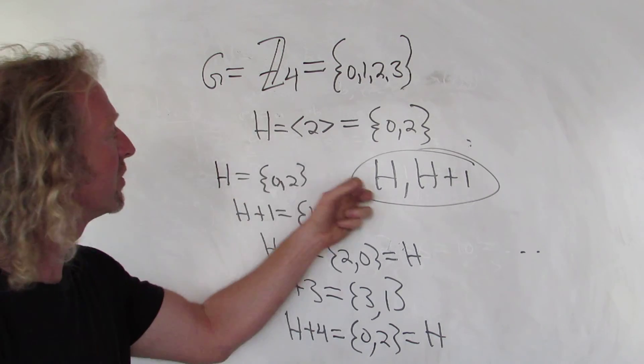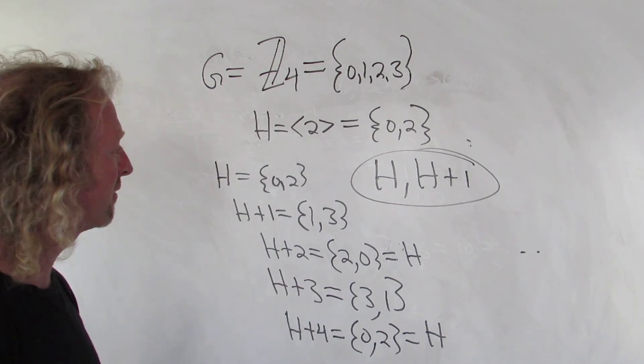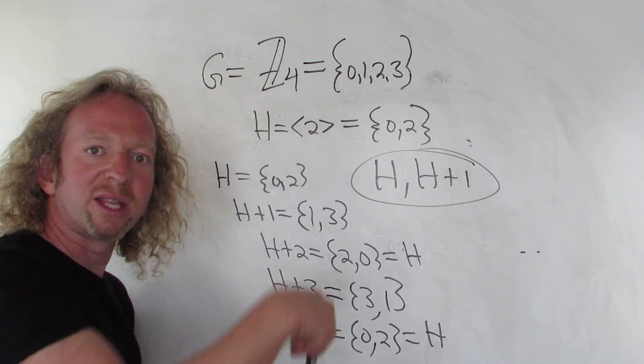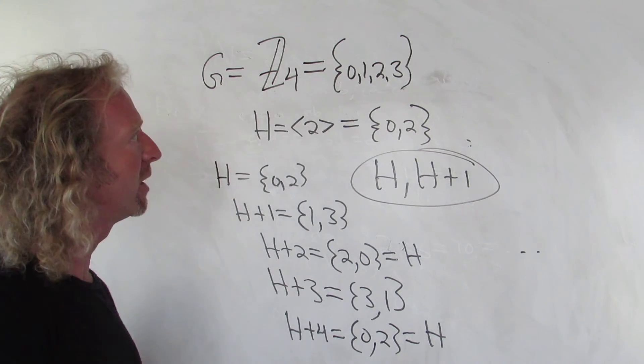Those would be the right cosets of H and G. So how do you find them? You just start writing stuff down and adding, and it's usually pretty simple. So I hope that helps.